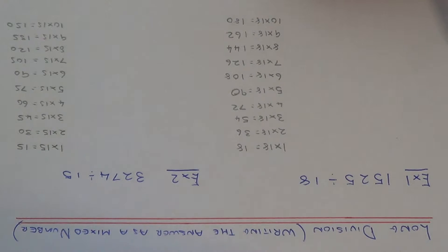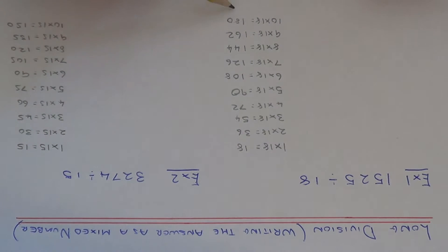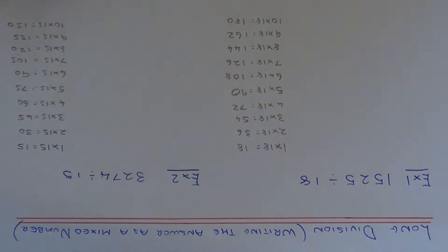In example one, we've got to work out 1525 divided by 18. As you can see on the side of the page, first of all I've written down some multiples of 18 to start off with. This will save you time later on and make things easier, so we don't have to keep working out our multiples of 18.